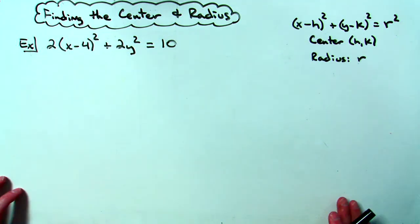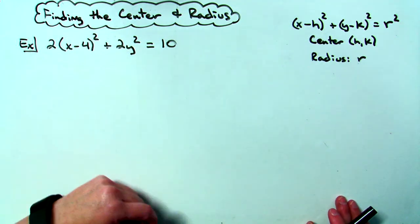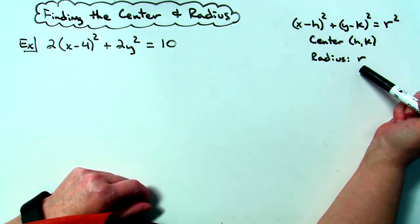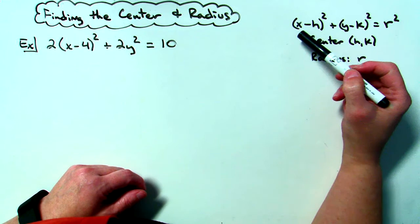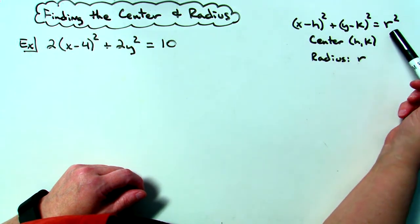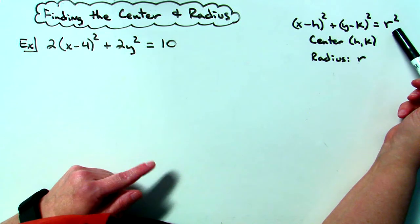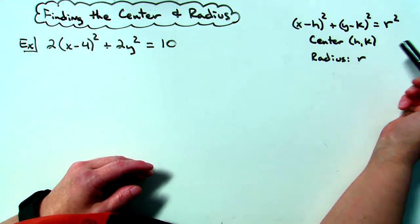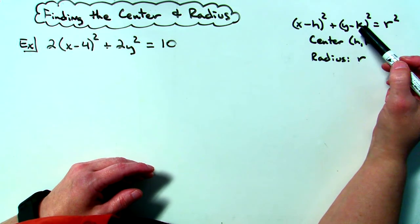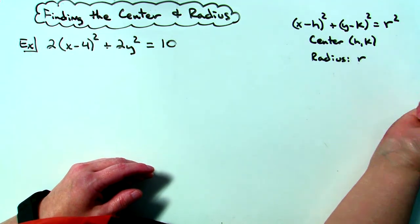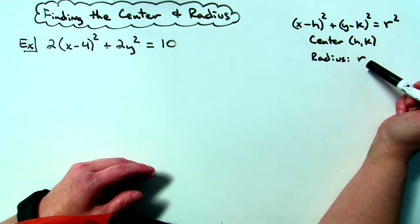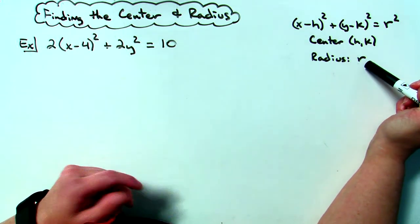Today we're going to take a look at finding the center and the radius for some circles. The standard form of a circle is: x minus h, quantity squared, plus y minus k, quantity squared, equals the radius squared. When it's in standard form, finding the radius and the center is not hard at all, because we take the opposite of the h value and that becomes our x coordinate of our center. We take the opposite of our k value and that becomes our y coordinate for our center. Whatever number is on the right side, we take the square root of it and that gives us the radius.